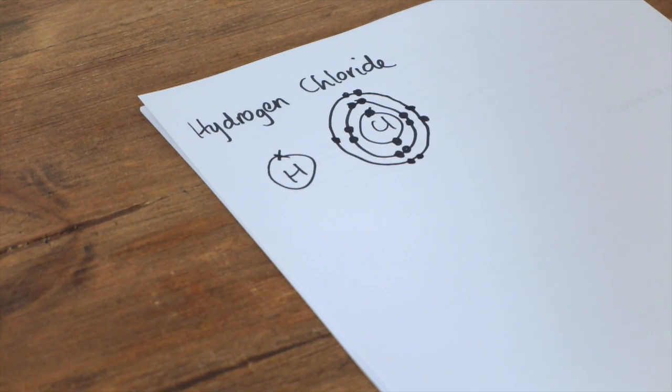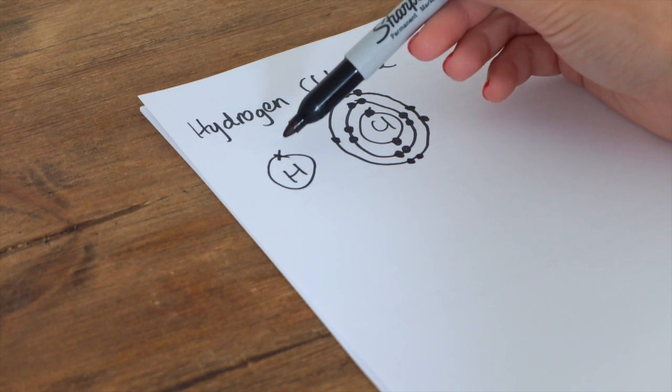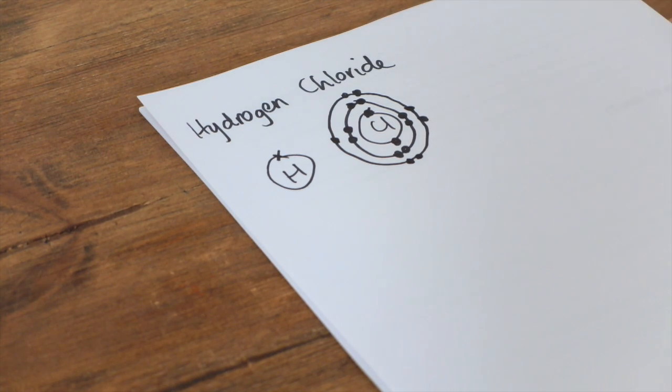I'm just going to draw it to show you. Right, so some people here might be tempted to do an ionic bond and transfer the hydrogen electron to chlorine. But remember, you can't do that in this case, because this is covalent bonding. It occurs between two non-metals. Ionic bonding, by definition, can only occur between a metal and a non-metal.